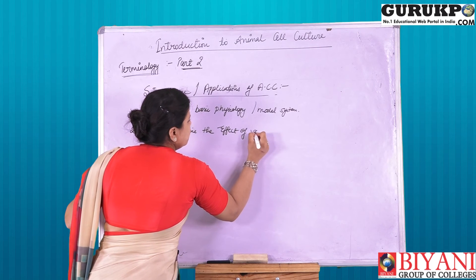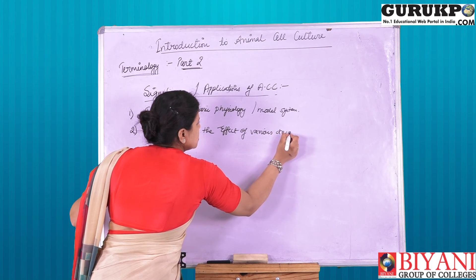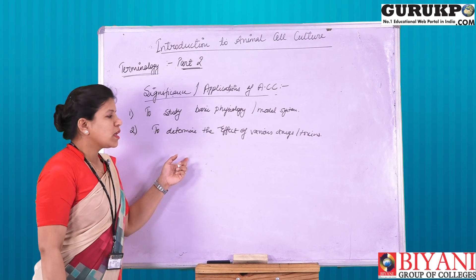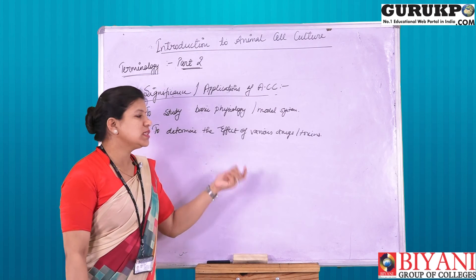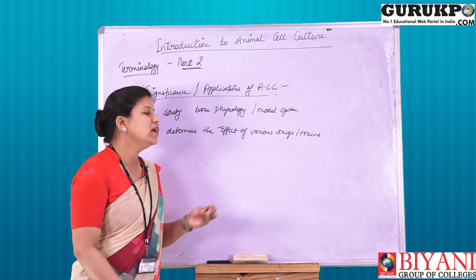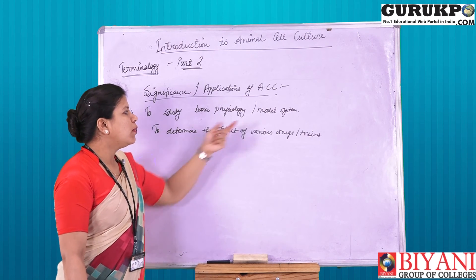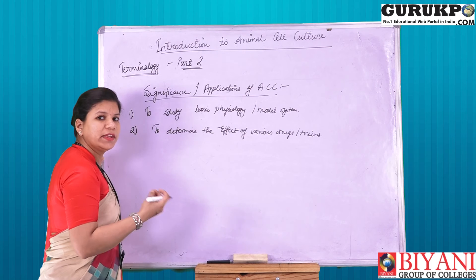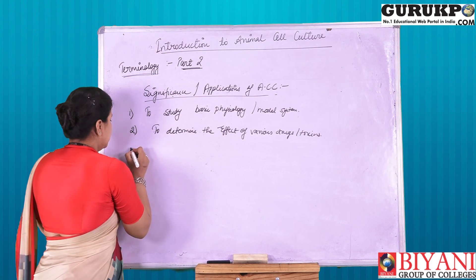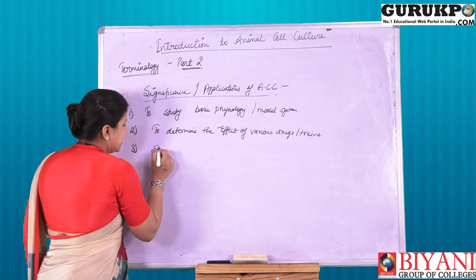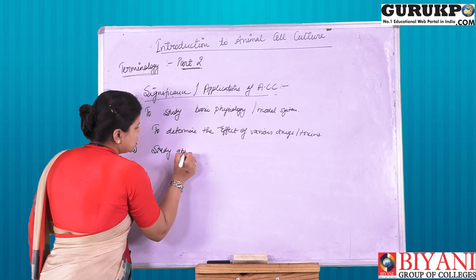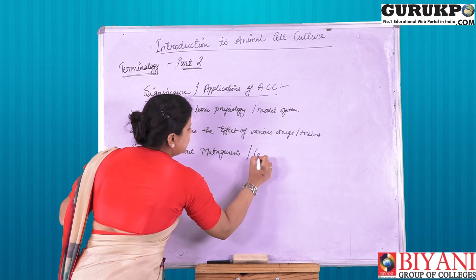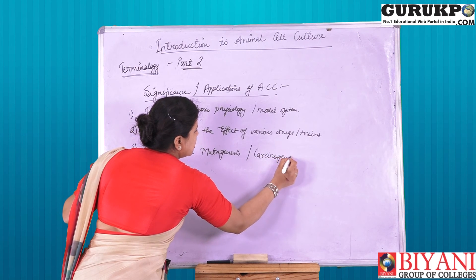Second, we can determine the effect of various drugs or toxins on cells or body parts. Whatever kind of drugs or toxins we are discovering day to day, we can test them on the model system by the help of animal cell culture — to determine what their effect will be, whether beneficial for the cell, human body, or animal or not.